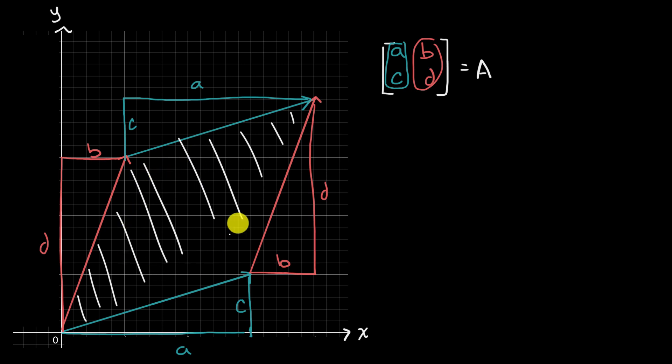Now, how can we figure out the area of this parallelogram? Well, one technique would be find the area of this larger rectangle right over here. And then from that, subtract out the parts that are not in the parallelogram. So let's do that.